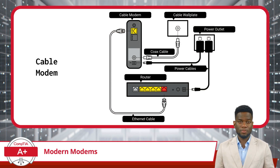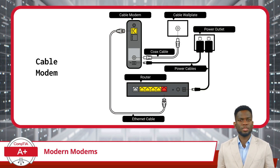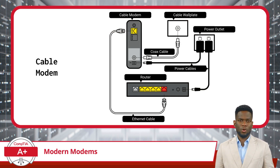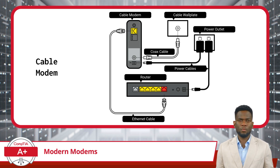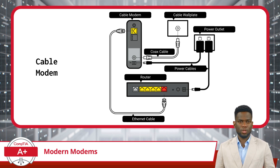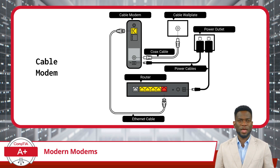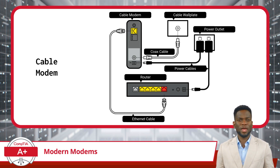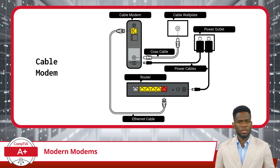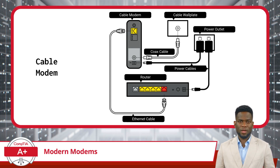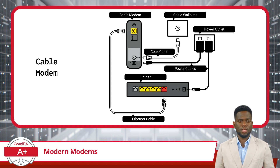I will now talk about cable modems. A cable modem modulates and demodulates cable TV signals to provide internet access. Your internet service provider sends internet data in one format that the cable modem then converts into another format that your computer or network can understand. This also happens in reverse for outgoing data. A cable modem connects to your home through the same coaxial cable that brings in cable TV, plugging into a cable outlet on one end and to a computer or router on the other end, usually via an Ethernet cable.